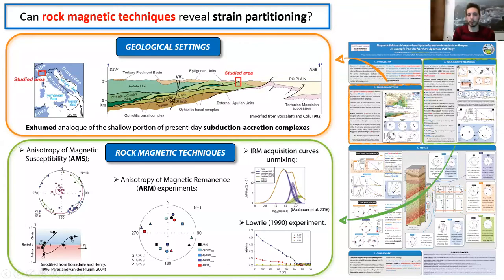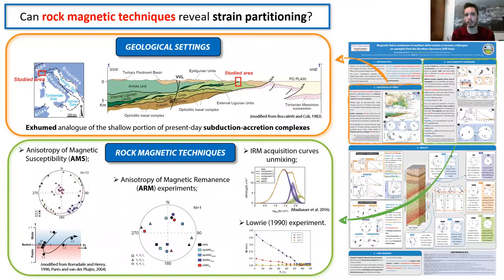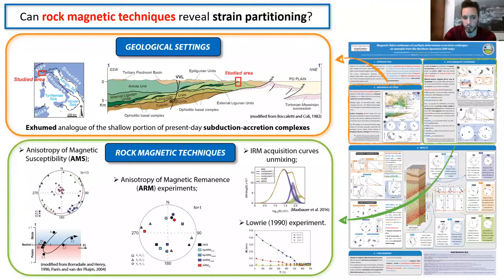Here the original sedimentary sequence was disrupted into broken formation during the accretionary stage, and subsequently involved in the thrusting stage during the collisional episode, leading to tectonic melange formation.